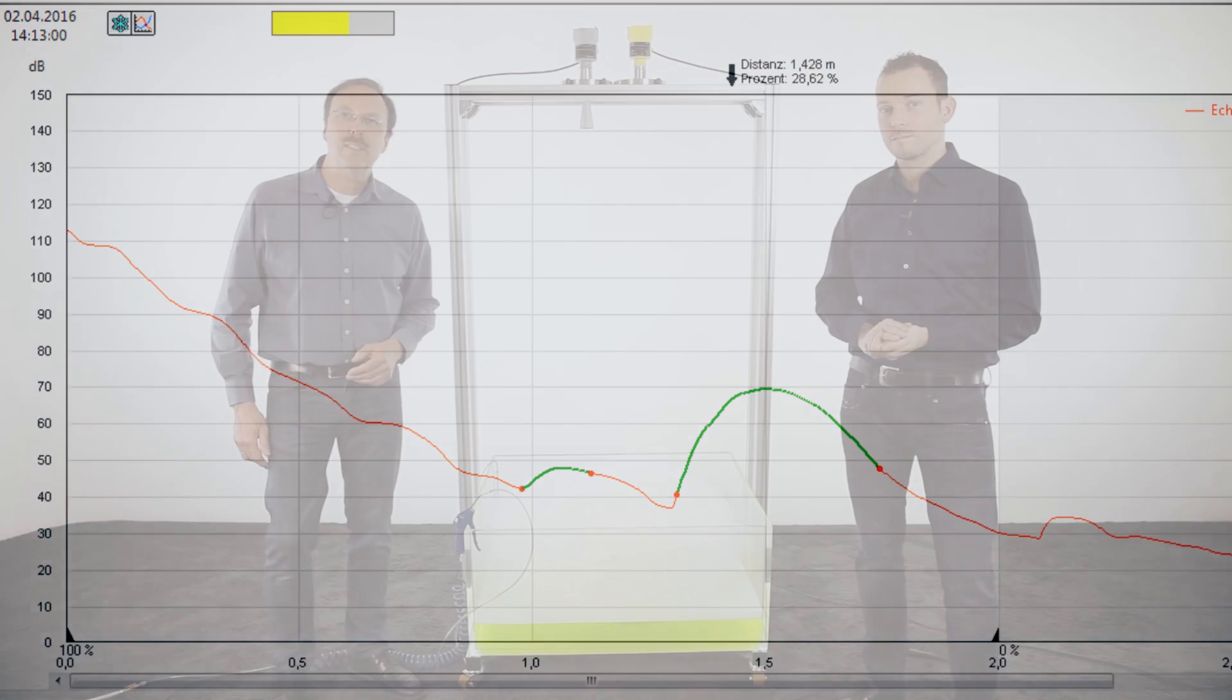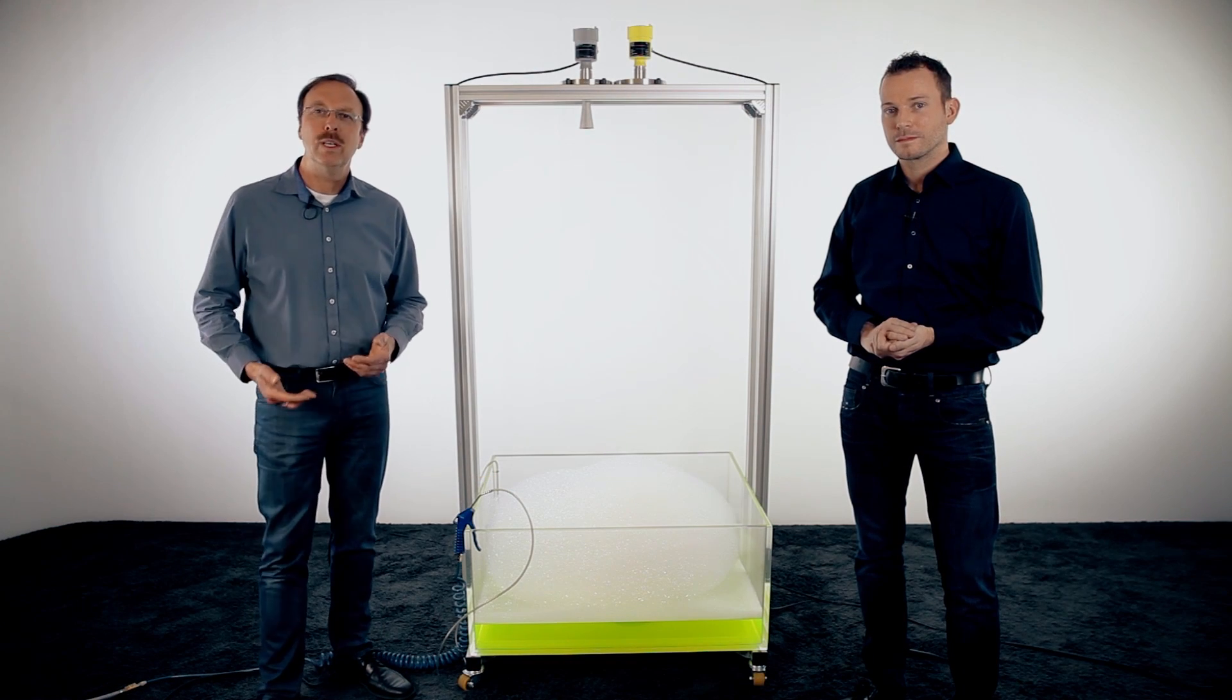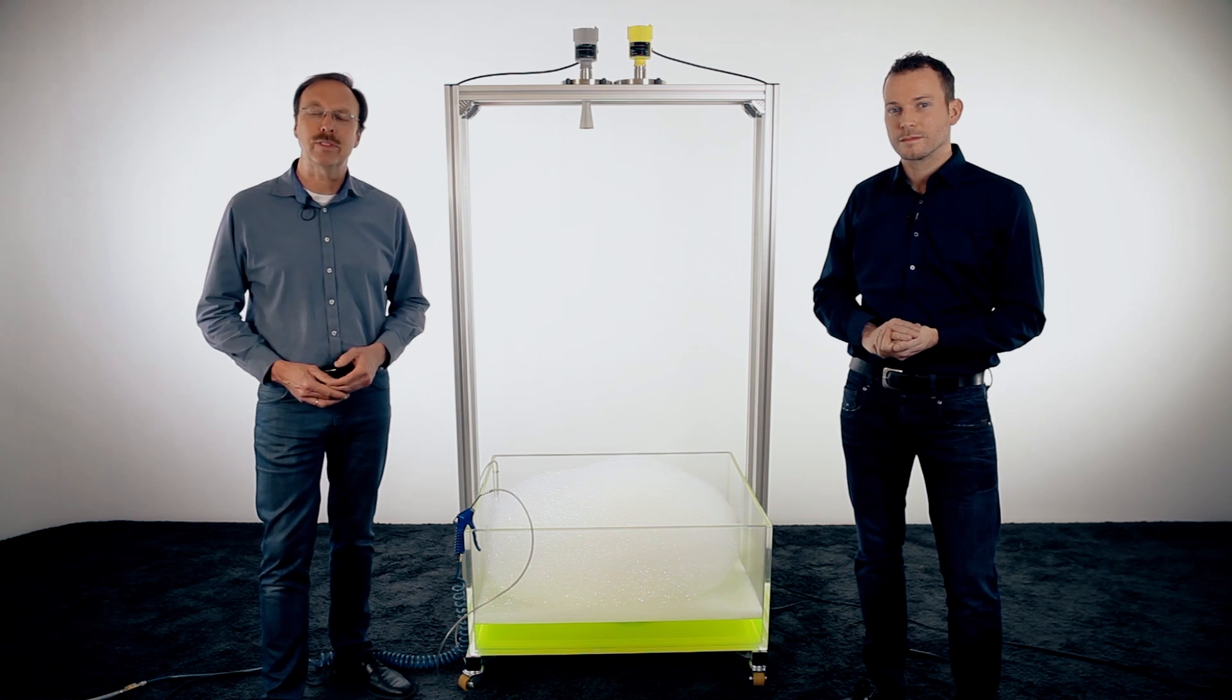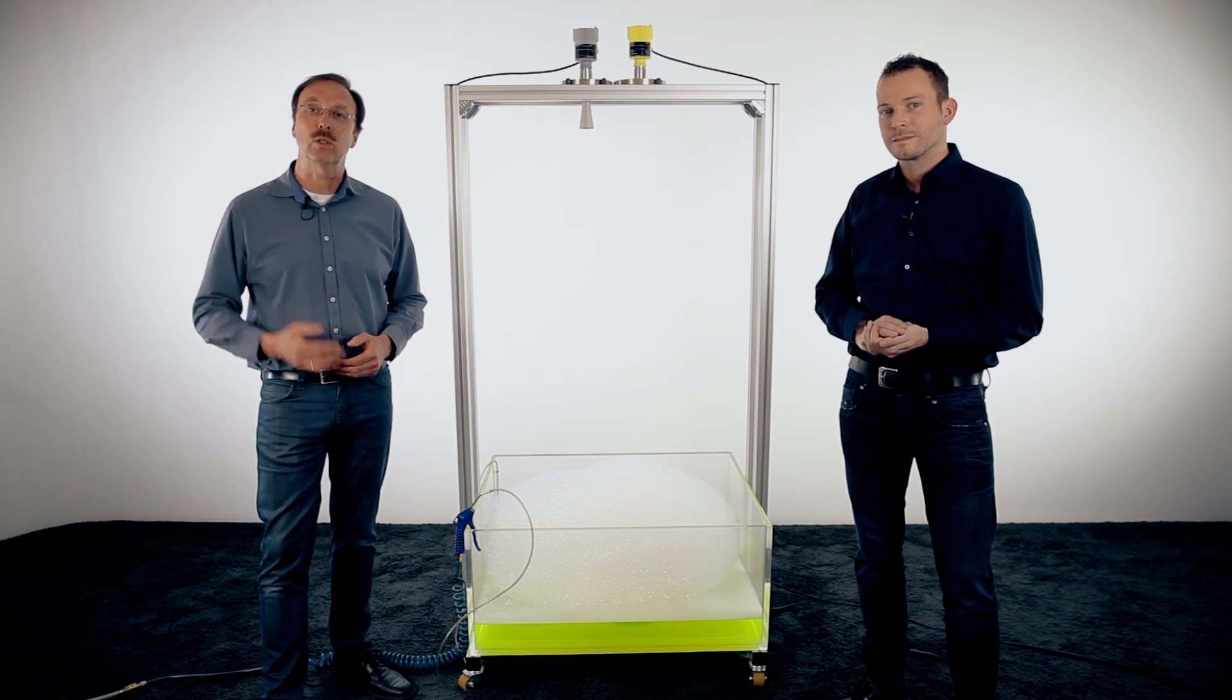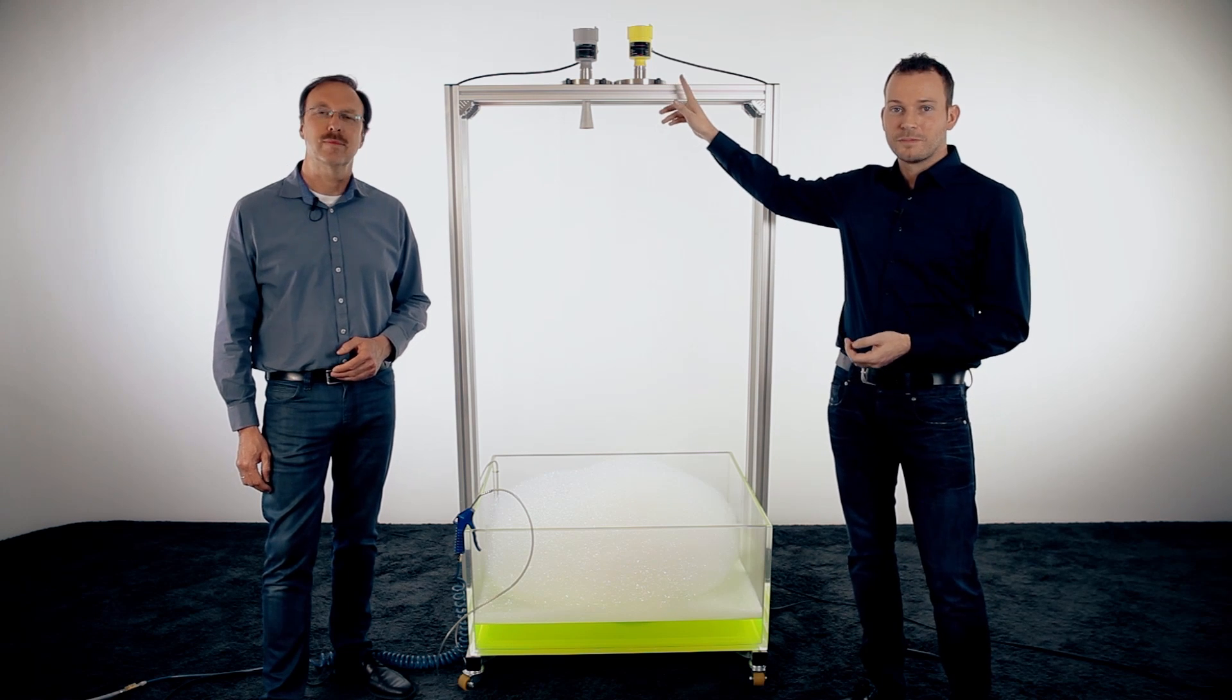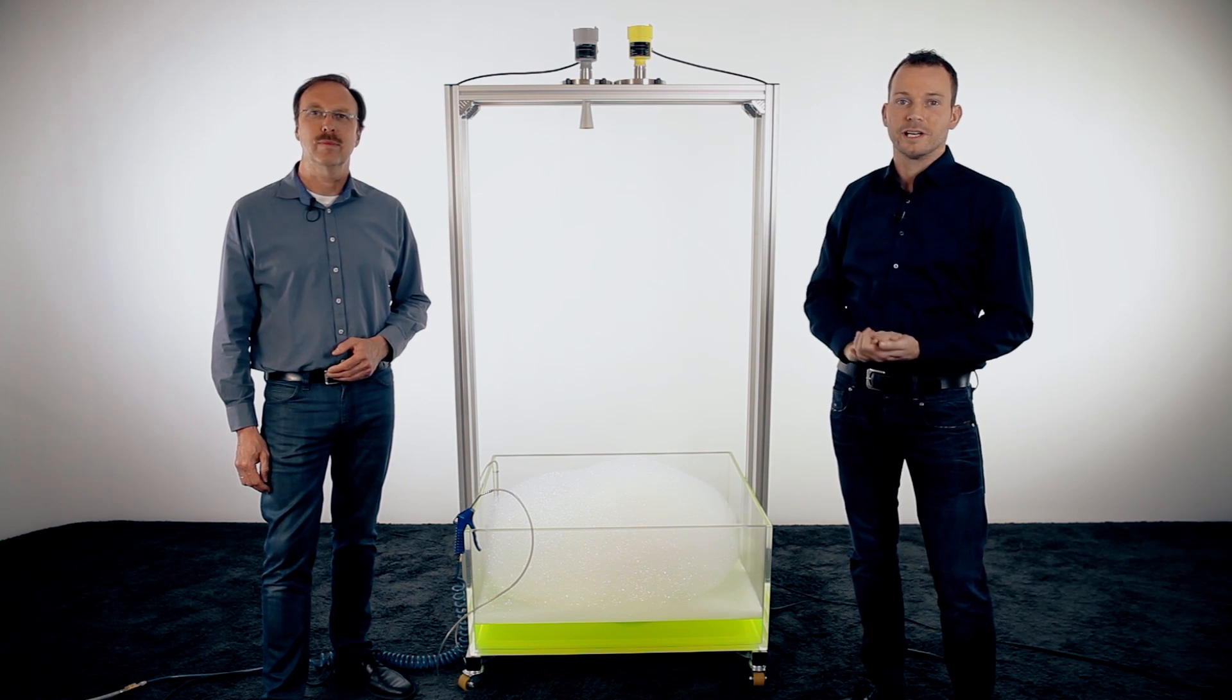In practical application, this means that the Vega Pulse 64 is a very good solution even when you have some foam. You get a very high reliability over the whole complete measuring range. So the Vega Pulse 64 is the perfect sensor if you have foam in your application.